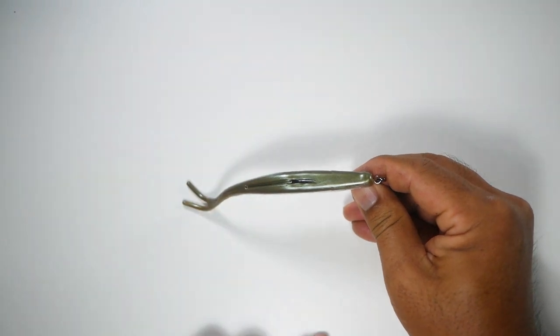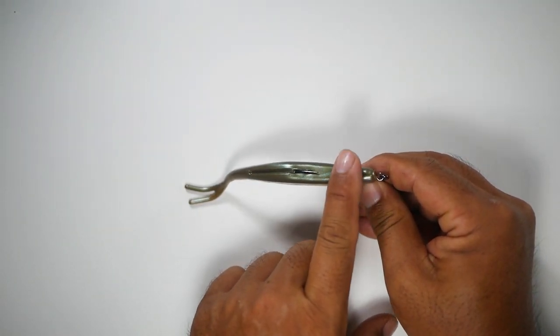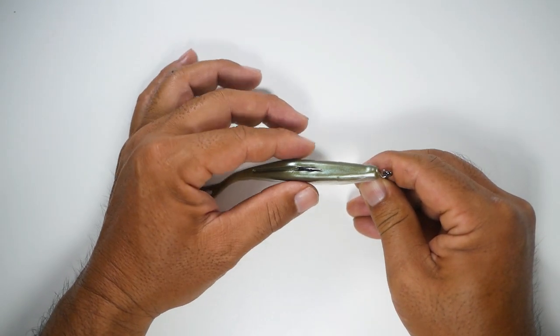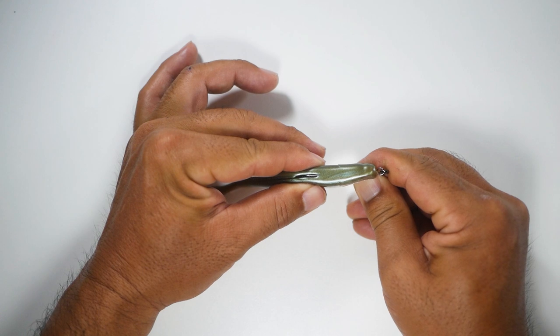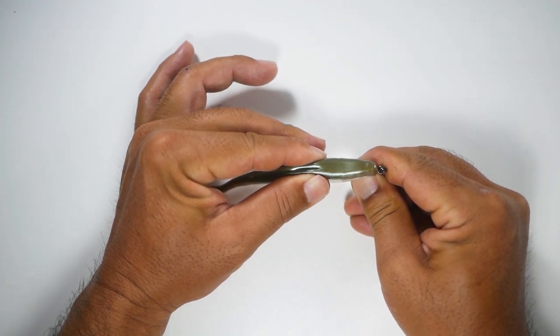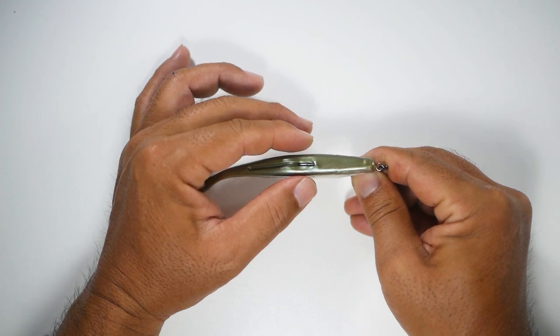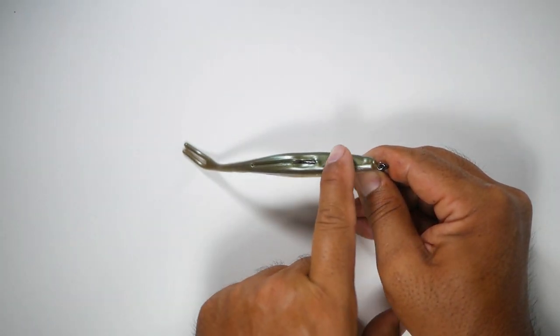And then if we want to make this weedless, right now the point is slightly above the plastic. Just grab the sides of the bait, push it forward a little bit, and then raise it up and insert the hook point into the plastic. And that's going to make it weedless.